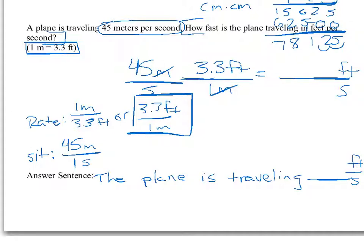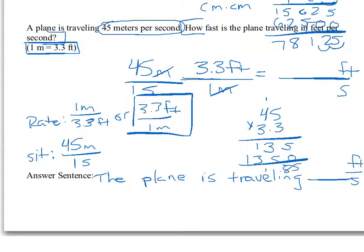We have 45 times 3.3 on top, and 1 times 1 seconds on the bottom. Multiplying 45 times 3.3 gives us 148.5. With one decimal place, our answer is 148.5 feet per second.